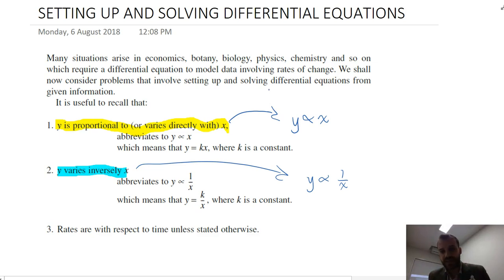Now, if that's the case, then Y is going to equal KX, where K is some constant. And if it varies inversely, then Y is going to be equal to K on X.